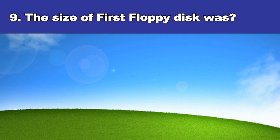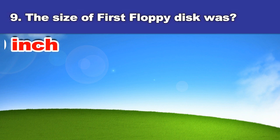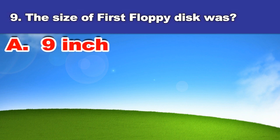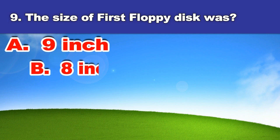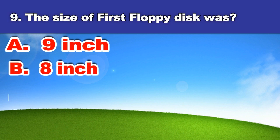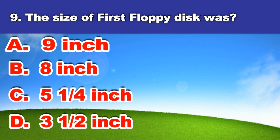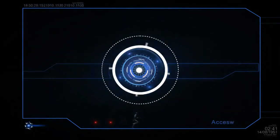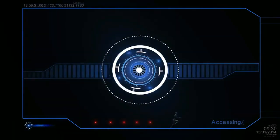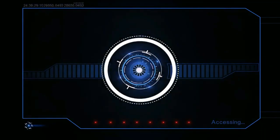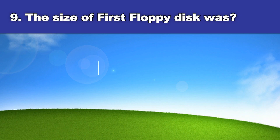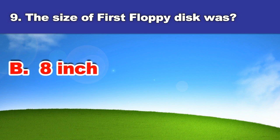Ninth question. The size of the first floppy disk was: A. Nine inch, B. Eight inch, C. Five and a quarter inch, D. Three and a half inch. And the answer is: Eight inch.